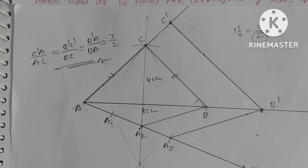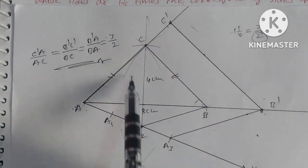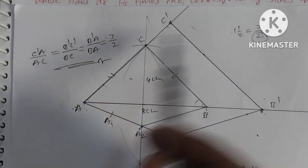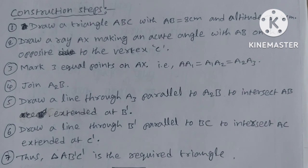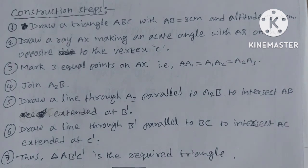In question 12, we made a smaller triangle with ratio 2/3, but here we make a bigger triangle with ratio 3/2. That's the difference. These are the construction steps. Share this video. Thank you.